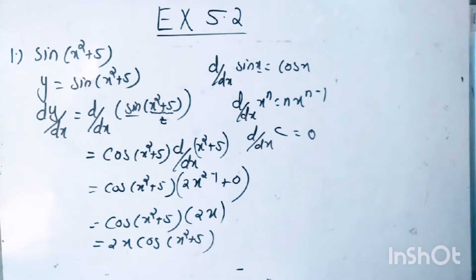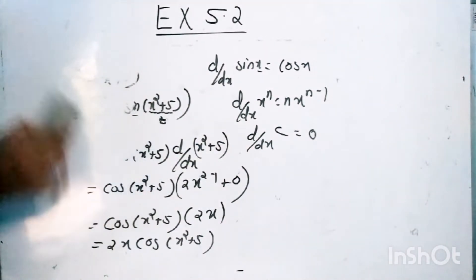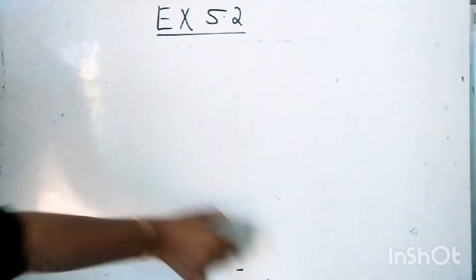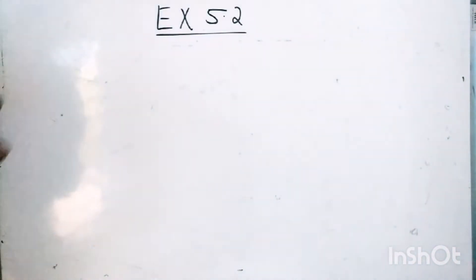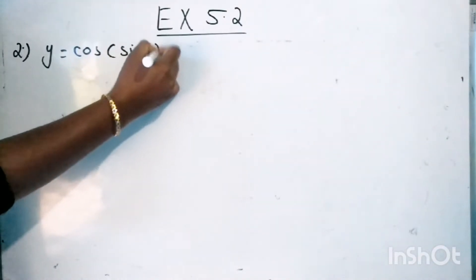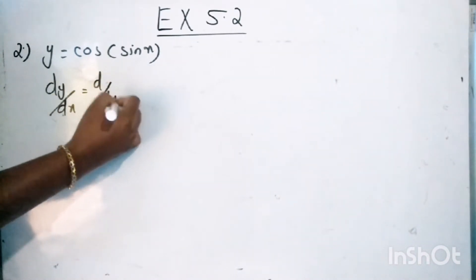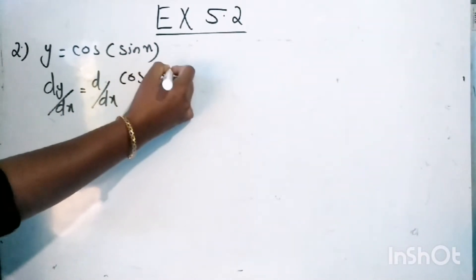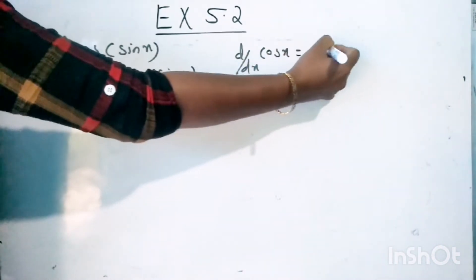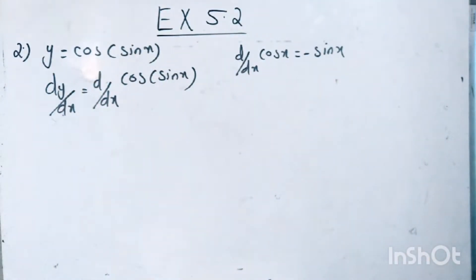Now we are going to do the second question: cos of sin x. We need to find out the derivative, that is dy by dx of cos of sin x. The derivative of cos x is equal to minus sin x.